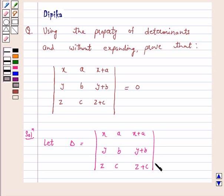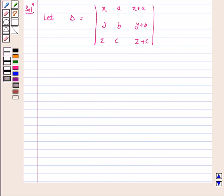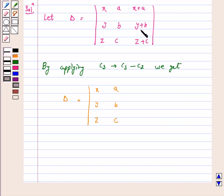We will use the properties of determinants to prove that delta equals 0. By applying c3 goes to c3 minus c2, we get delta equals the determinant with rows x, a, x; y, b, y; z, c, z, because c3 is c3 minus c2, so x plus a minus a equals x, y plus b minus b equals y, z plus c minus c equals z.